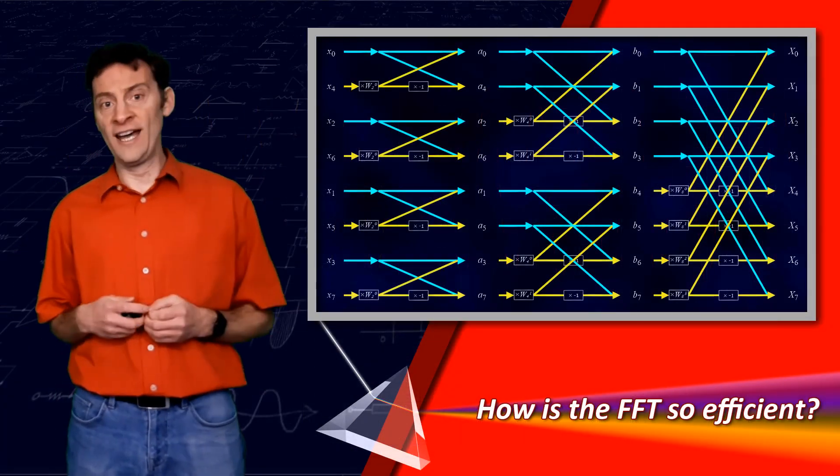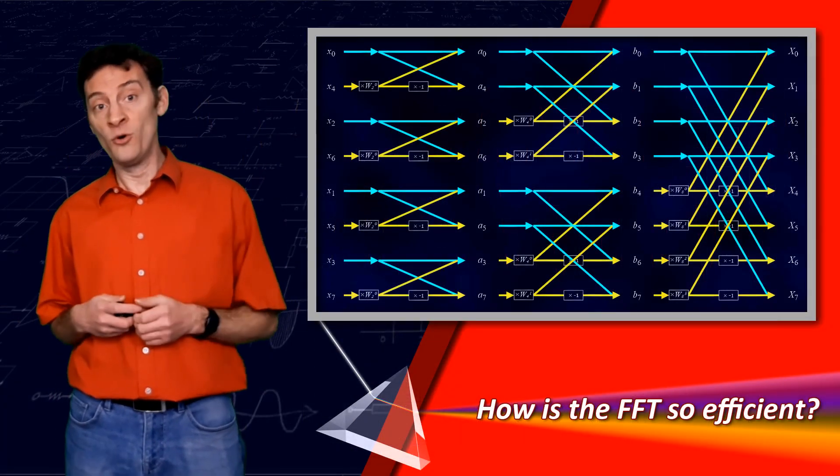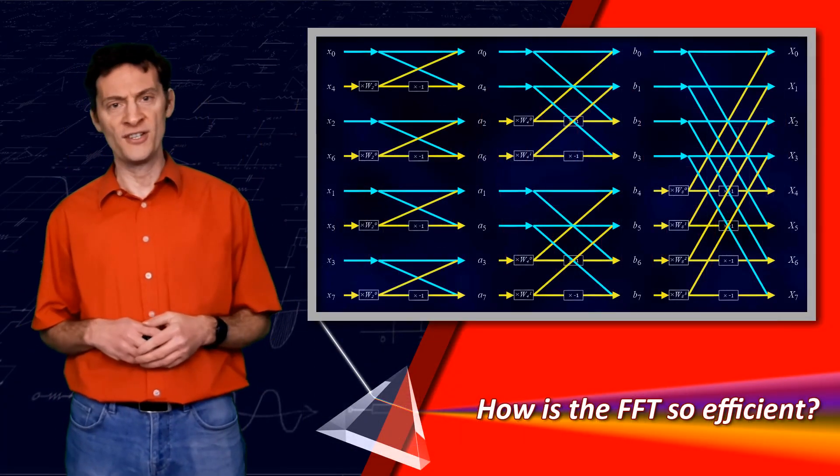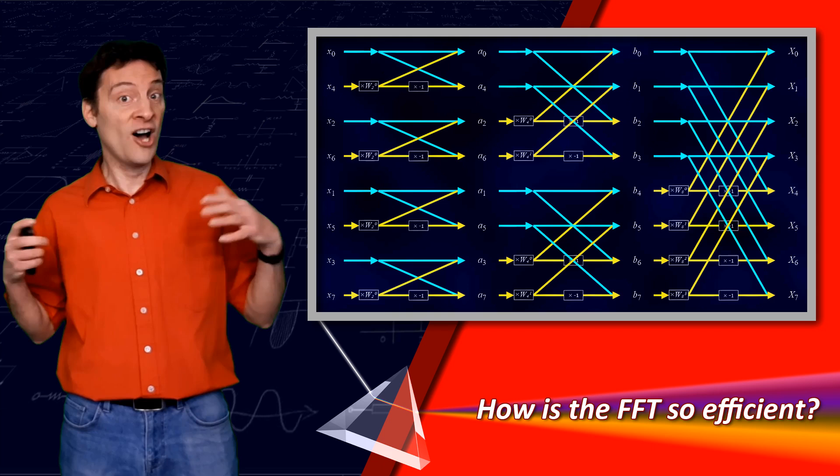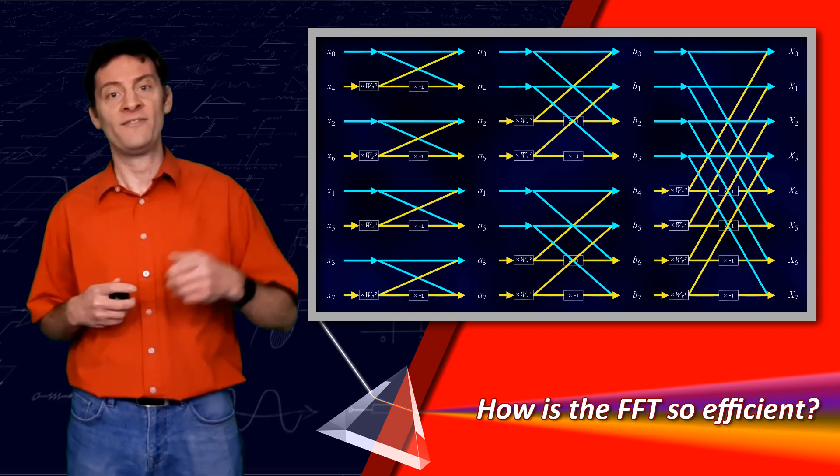The FFT, on the other hand, can do this in a mere 24 complex multiply and add operations. That's less than half as many operations. As the signal gets larger, this saving becomes even greater.